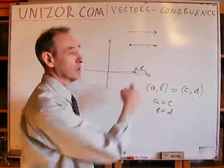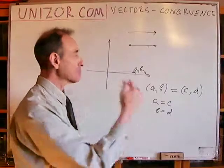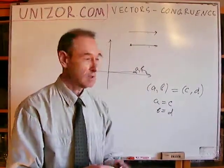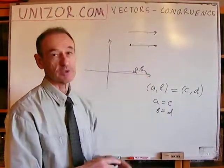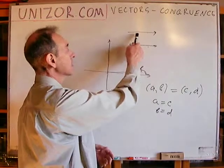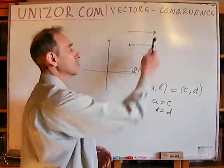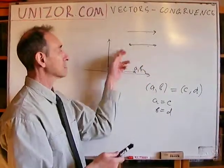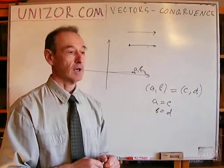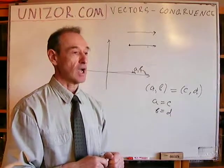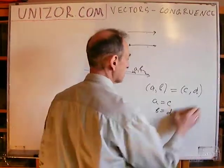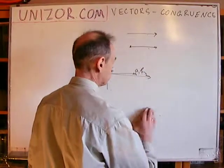Fixing the origin enables me to represent a vector as a tuple with only as many parameters as the dimension of the space — two in this particular 2D case. Now let me give you a concrete example.